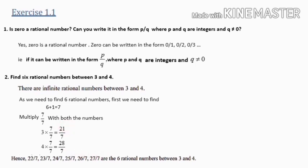To recap: we were asked to find 6 rational numbers, so we added 6 + 1 = 7, then multiplied 7/7 with the given numbers. 3 × 7/7 = 21/7, and 4 × 7/7 = 28/7. From 21 to 28, we write all other numbers: 22, 23, 24, 25, 26, and 27 — divided by 7 — are the 6 rational numbers between 3 and 4.